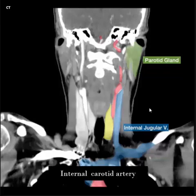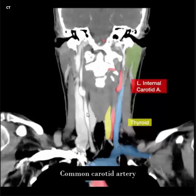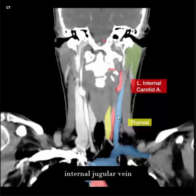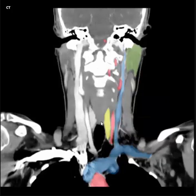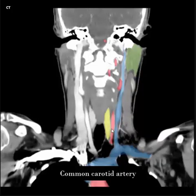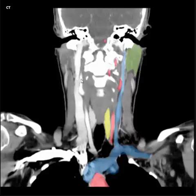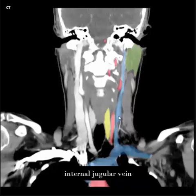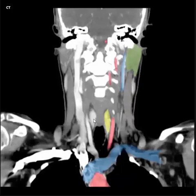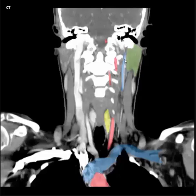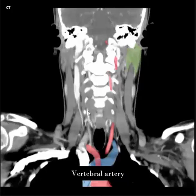Internal carotid artery. Right and left common carotid artery, right and left internal jugular vein, right and left thyroid gland. Right and left common carotid artery, internal carotid artery, internal jugular vein. Right and left common carotid artery, internal jugular vein, vertebral artery.